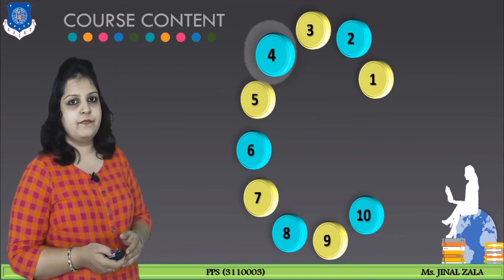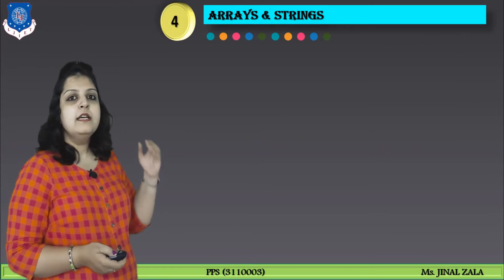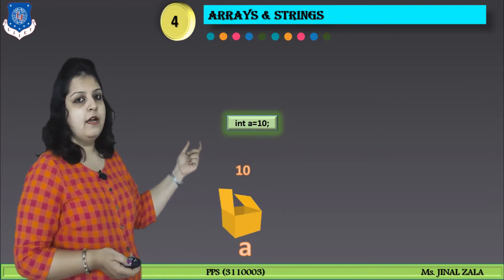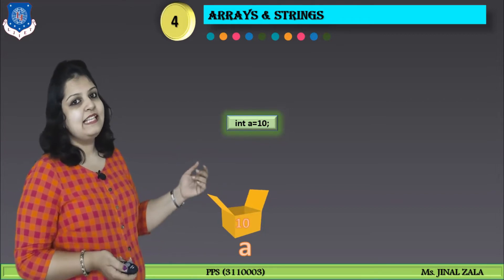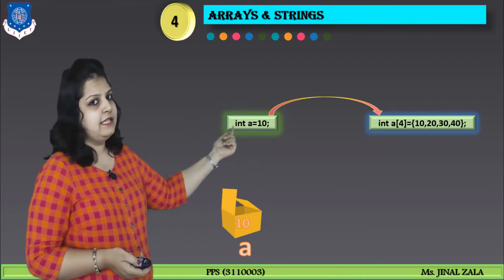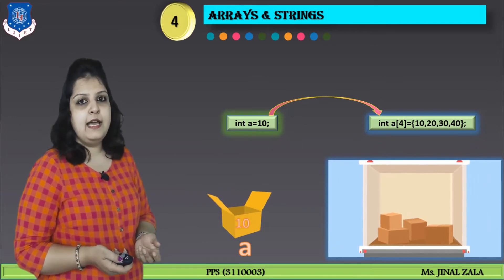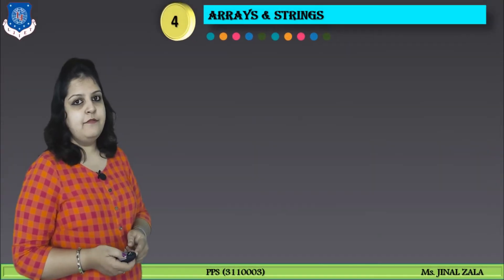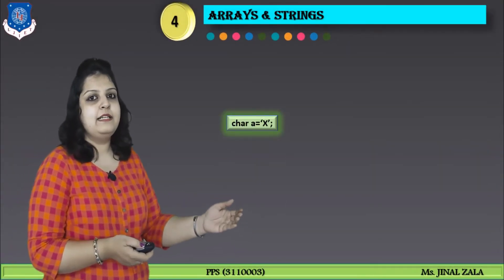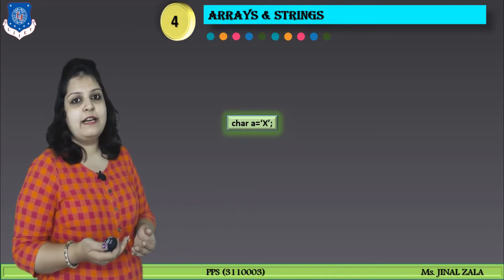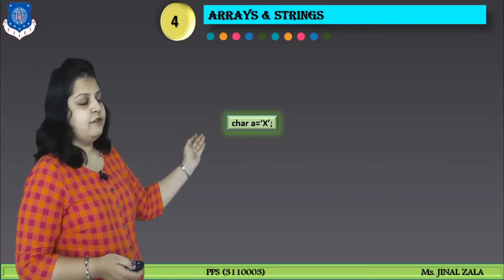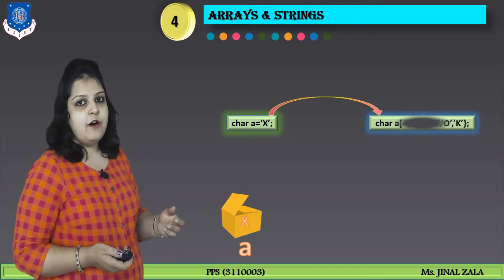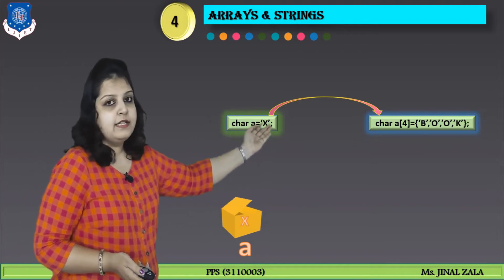Our upcoming module, module number 4, is arrays and strings. Just remember the concept of variables — here, integer a equals 10, and this variable contains the value 10. But if you want to store multiple values in the same variable — like four different values — then it is possible using an array. An array is a fixed-size sequential collection of elements of the same data type. What is a string? String is similar to an array — it is nothing but a character array. If you want to store characters or your name, then it is possible with a string. In this example we can store only a single character, like char a equals 'x'. But if you want to store your name or any other word, it is possible with a string.